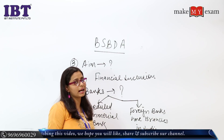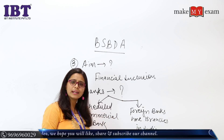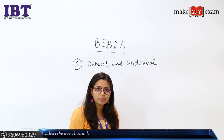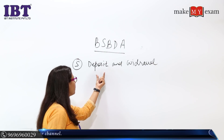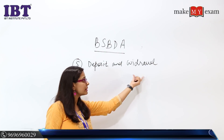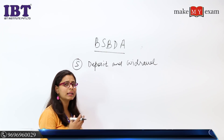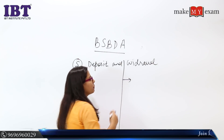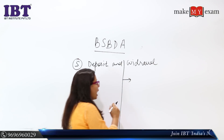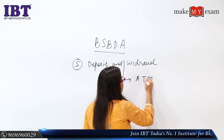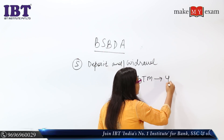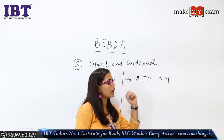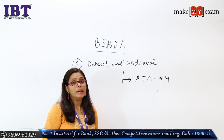Now, what are the different facilities provided under BSBDA? These include deposit and withdrawal facilities. For withdrawal, electronic payment facility is provided, and you can do ATM transactions. Four transactions or four withdrawals are provided free of charge without any cost.